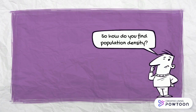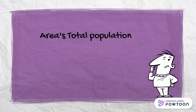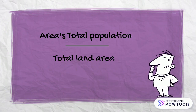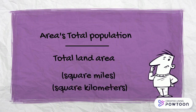Finding an area's population density is easy. All you have to do is divide an area's total population by the land area, either in square miles or square kilometers.